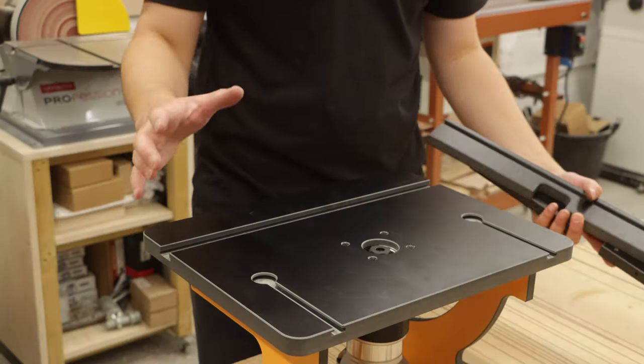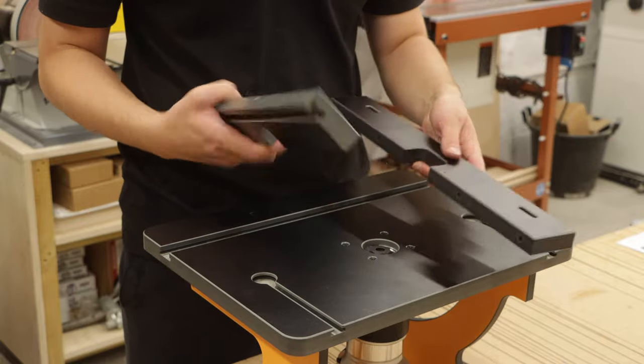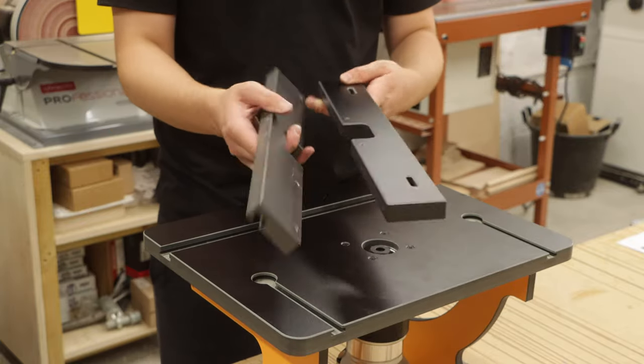Now for a small benchtop router table, the fence is really chunky and solid. You've got two pieces that you bolt together.